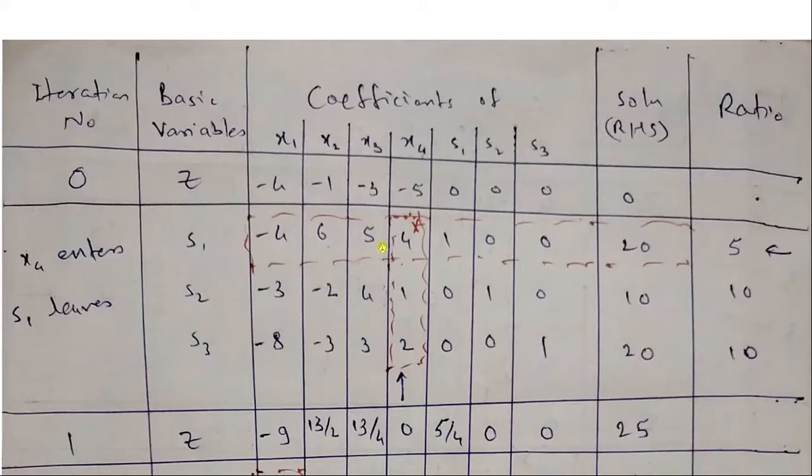In s1 row, we will write down all the coefficients in the first constraint. In s2, coefficients in the second constraint. And in s3, coefficients in the third constraint. Now, most negative number is minus 5, so the corresponding column is the pivot column. x4 enters the table. Then we find out ratio: 20 by 4 is 5, 10 by 1 is 10, 20 by 2 is 10. Lowest ratio is 5.